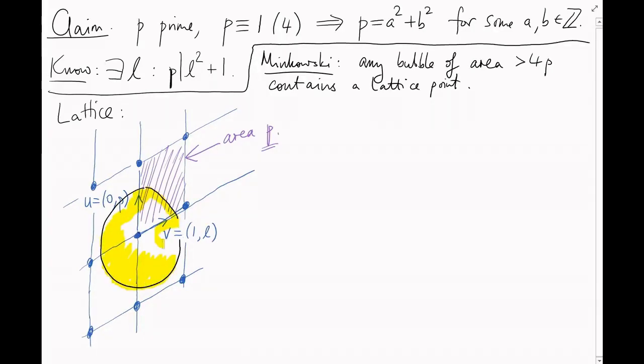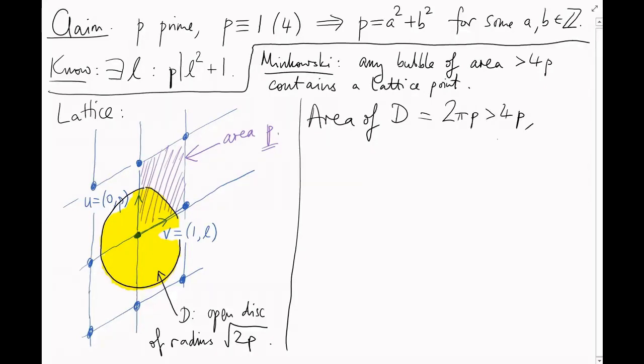Let's pick the open disk D of radius the square root of 2p. The area here is 2π times p, which is greater than 4p, so D does contain a point on the lattice. So our original diagram should probably have looked like this, as it contains a point on the lattice. Anyway, let's call this point we found du plus ev, which is (e, dp + el) in our coordinates on R squared.